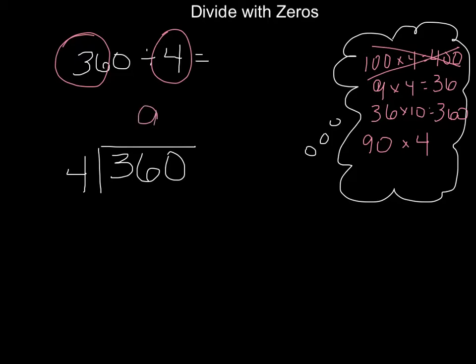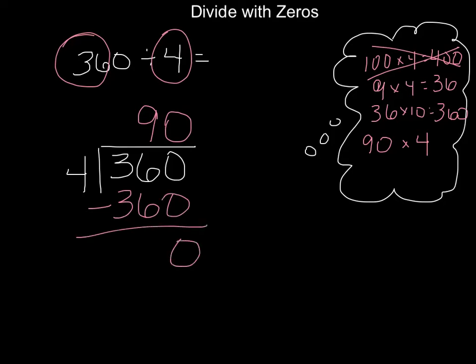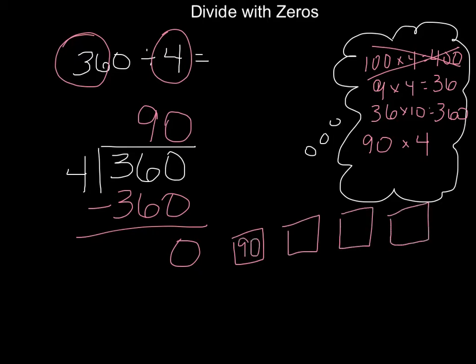So 90 groups of 4 will get me a total of 360, and that takes care of everything fitting into equal groups. The picture I might draw, if asked, would be: I've got 4 groups, and they've each got 90 — 90, 180, 270, and 360.